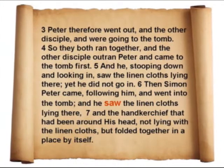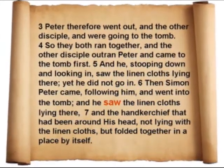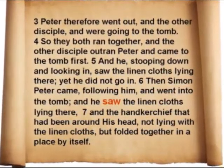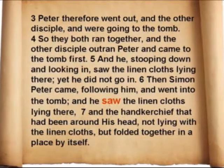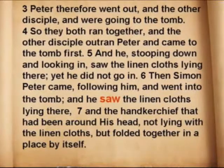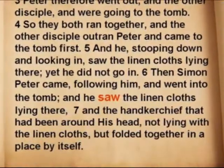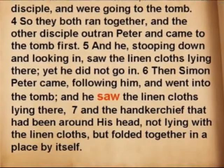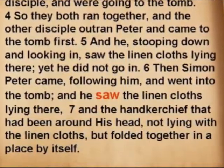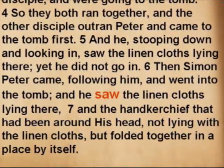Peter therefore went out and the other disciple and were going to the tomb. So they both ran together and the other disciple outran Peter and came to the tomb first, and he stooping down and looking in saw the linen clothes lying there, yet he did not go in. Then Simon Peter came following him and went into the tomb and he saw the linen clothes lying there and the handkerchief that had been around his head, not lying with the linen cloths but folded together in a place by itself.